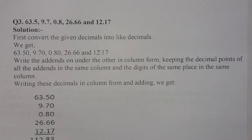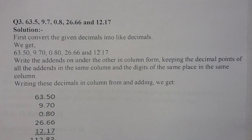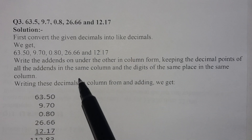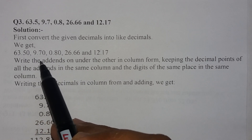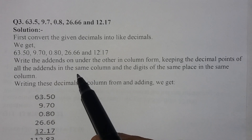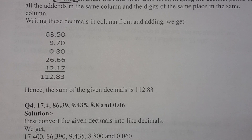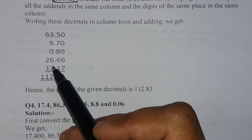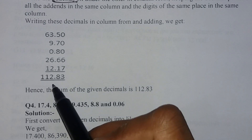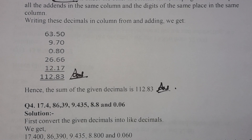In question number three, we have been given 63.5, 9.7, 0.8, 26.66, and 12.17. We have to add all these numbers. First, convert them into like decimals: 63.50, 9.70, 0.80, 26.66, and 12.17. Arrange them in column form, and after adding all these numbers, our answer will be 112.83.